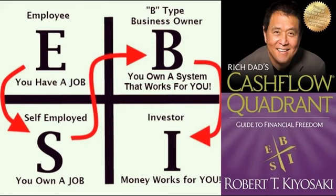Rich Dad told me a simple story when I was 12 years old that has guided me to great wealth and financial freedom. It was Rich Dad's way of explaining the difference between the left side of the cash flow quadrant — the E, employee, and S, self-employed quadrants — from the right side, the B, business owner, and I, investor quadrants. It goes: Once upon a time, there was this quaint little village. It was a great place to live, except for one problem — the village had no water unless it rained. To solve this problem once and for all, the village elders decided to put out to bid the contract to have water delivered to the village on a daily basis.